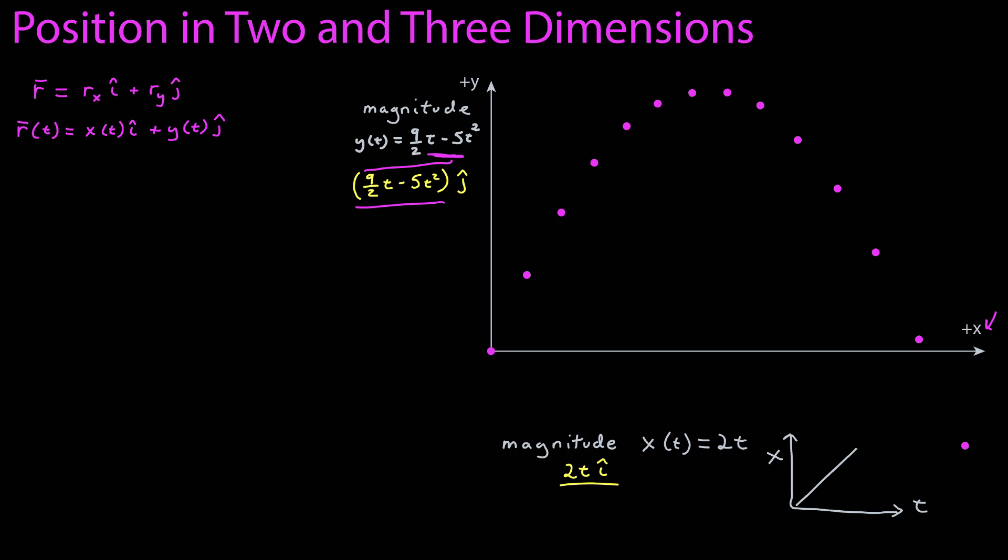Now, to find the position function arrows, I can just add the x and y component vectors together using our graphical representation of vector addition. Of course, the first one is just zero, but here for the second one, I have the x-component vector plus the y-component vector, and the resulting is the displacement vector for the object in that point in time. Here's the next one. The resulting vector is the vector sum of the x-component vector plus the y-component vector.